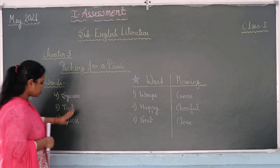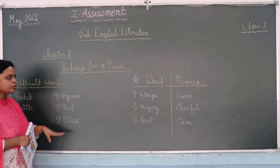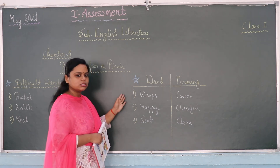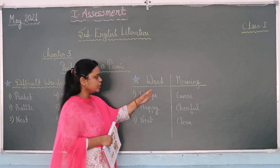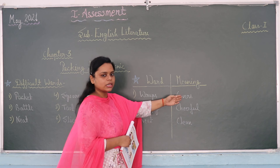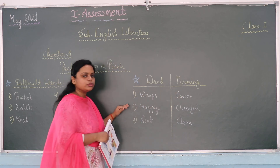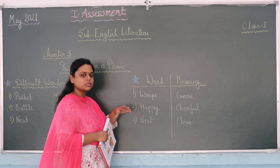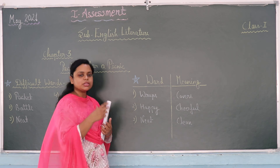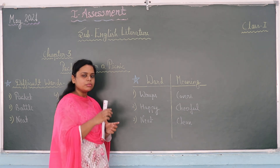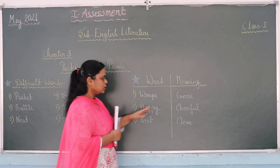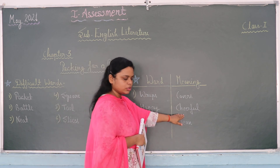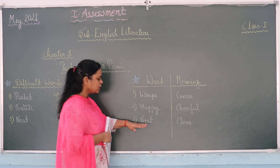After completing the six spelling words, you have to complete the word meanings from the next page. Turn the page, write the word, put a line, and write the meaning. There are three word meanings. First is 'wrap' — wrap means to cover something; for example, if you wrap sandwiches, you cover them. Second is 'happy' — meaning cheerful. Third is 'neat' — meaning clean.